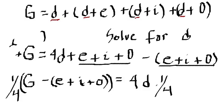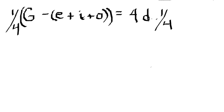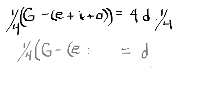Let me rewrite this. So this is d equals 1/4. We have g minus and then e plus i plus o.